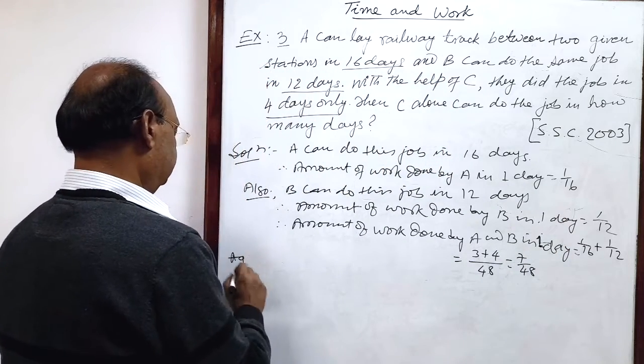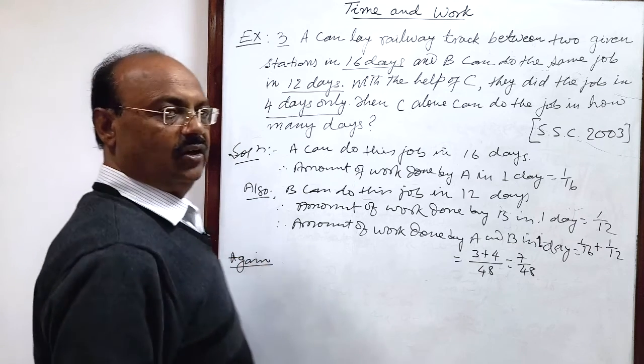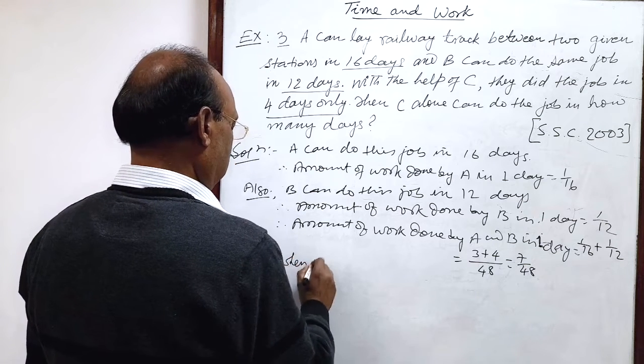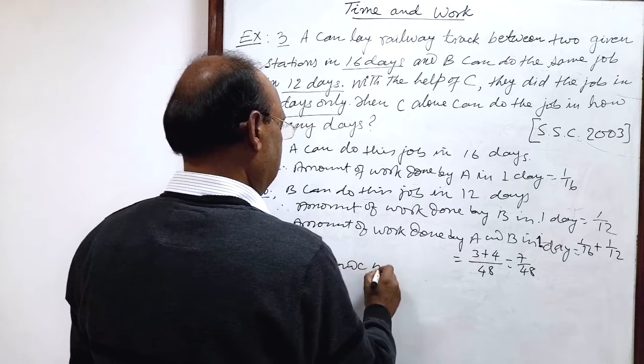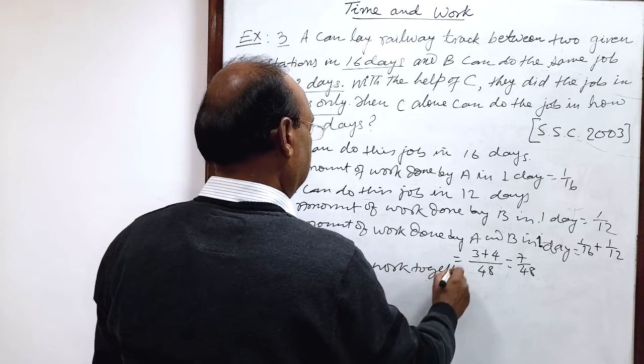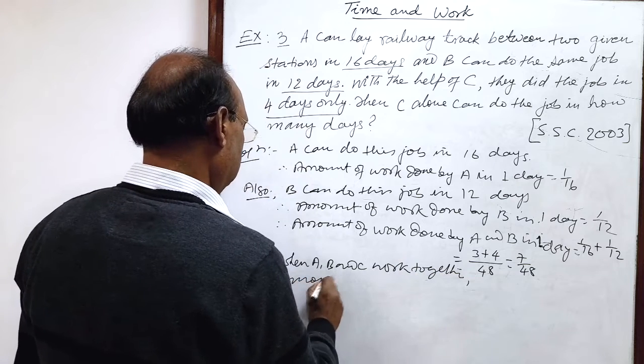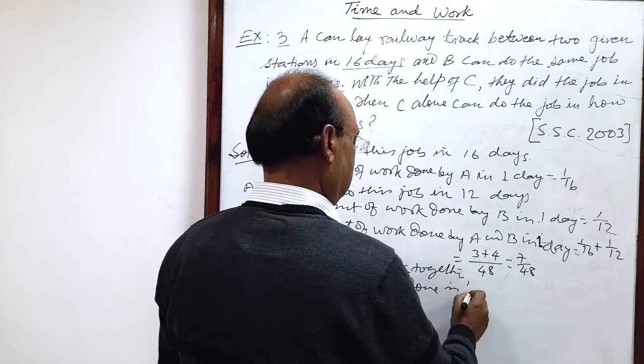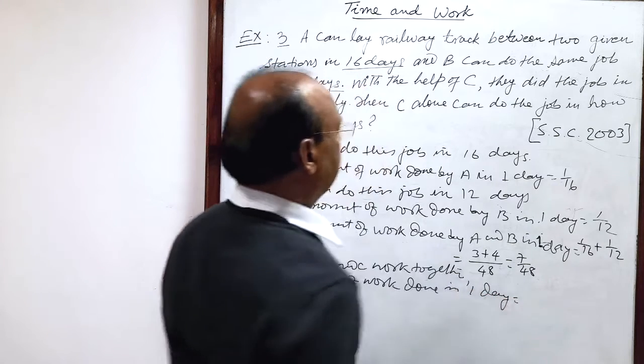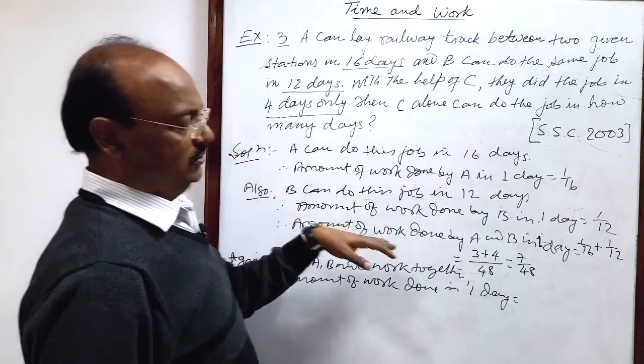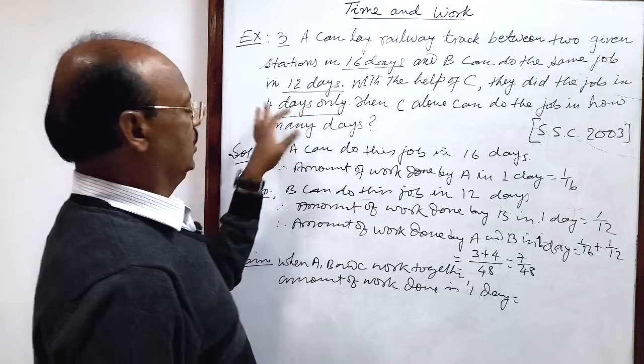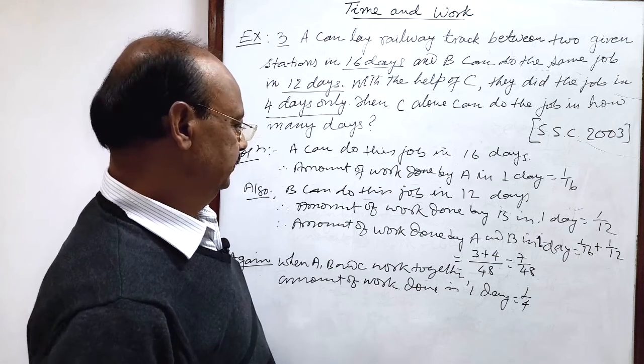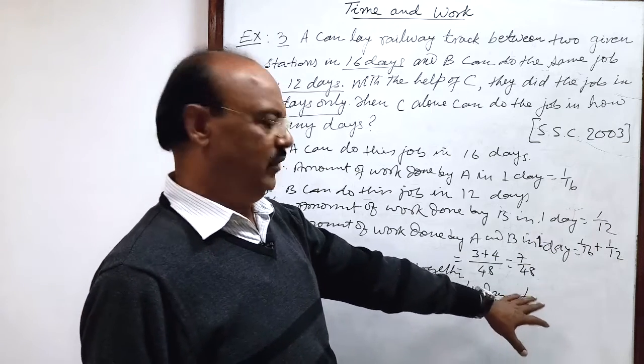Again, when A, B and C work together, when A, B and C work together, in this case, amount of work done in one day, the job is being finished in four days. So just we have got the reciprocal of number of days. So this will be 1 by 4 days. Amount of work, this is one-fourth of the job.